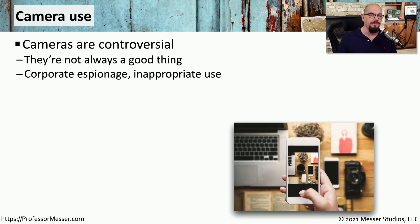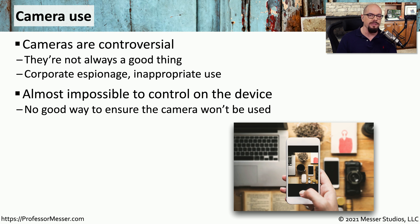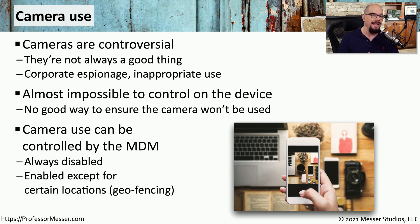Now that everybody is walking around with their own smartphone, they're also effectively walking around with their own camera. This is perfectly acceptable in most environments, but you may be working in a very high-security environment that doesn't want everyone bringing in their own camera. It's difficult to control camera use on the device itself, and you're never quite sure if somebody is using a camera. Fortunately, the MDM is able to enable or disable camera features and may configure them based on where you happen to be. If you're near the main corporate building, the camera may be disabled, but once you leave, the geofencing features of your MDM can recognize you're no longer near the main office and re-enable camera functionality.